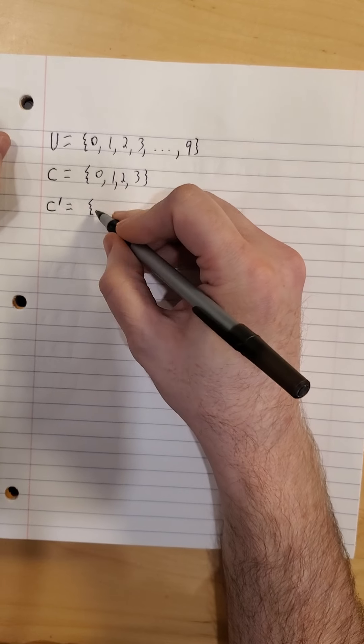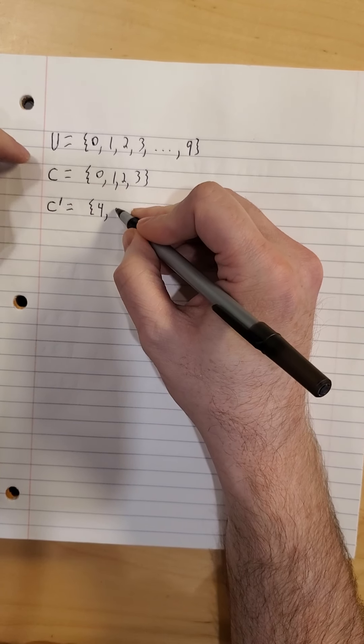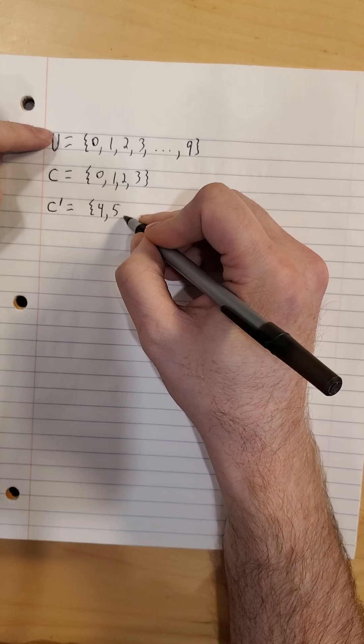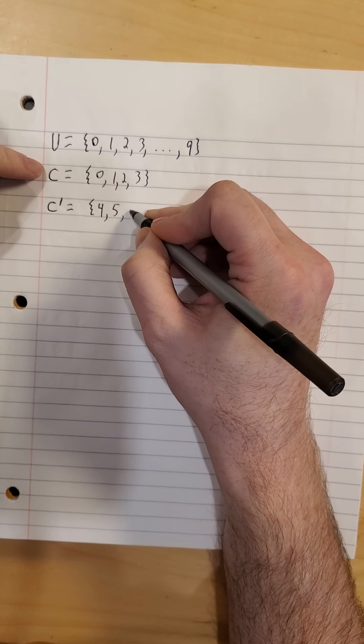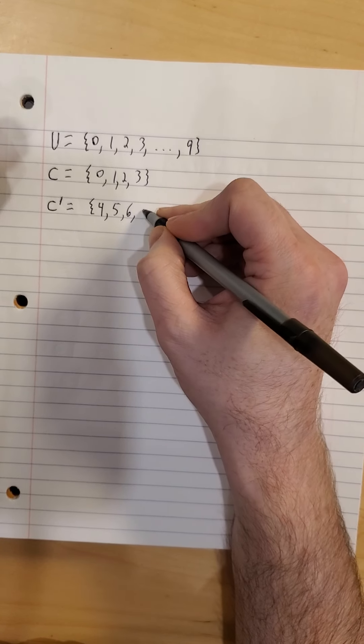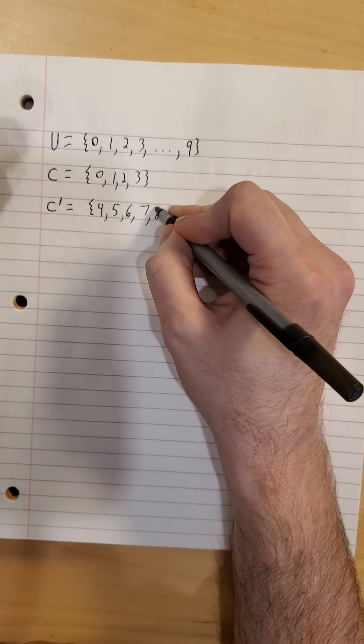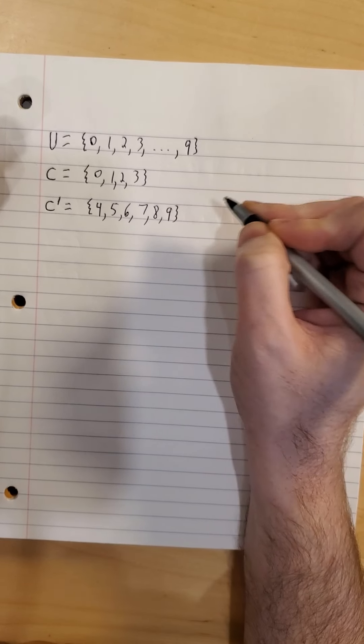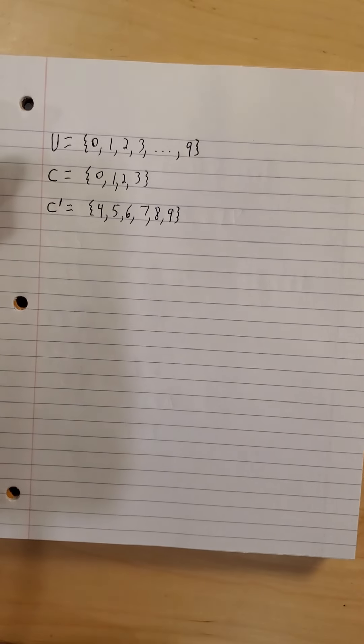So 4 is in our universal set, but not in C. 5 is in our universal set, but not in C. 6, same thing. 7, same thing. 8, same thing. And 9 would be the last part of C complement.